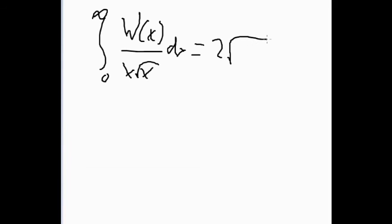Okay, so this challenge is integral from 0 to infinity of w of x over x square root x dx. To show that this is 2 times the square root of 2 pi, where w of x is the inverse of x e to the x. Yeah, so that concludes our first video on how to integrate properly. Goodbye.